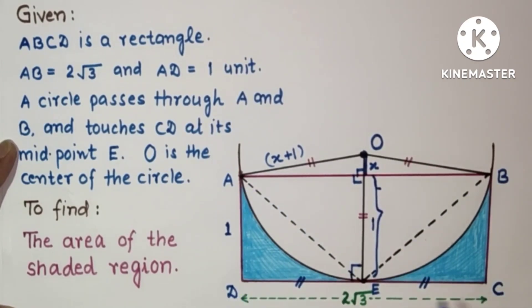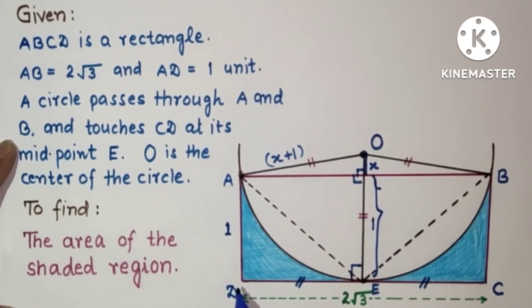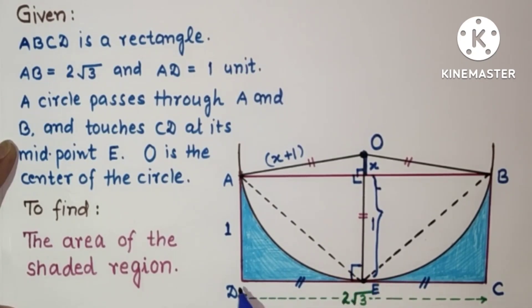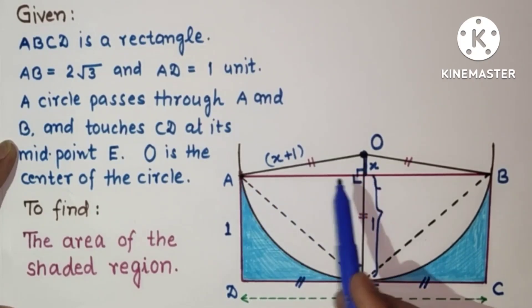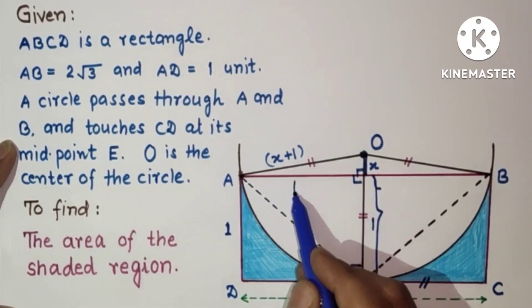The whole length AB is 2√3, so DC will also be 2√3. But E is the midpoint of DC, so DE will be only √3. This part (the horizontal distance from D to E, or equivalently from the center horizontally to A) is √3.